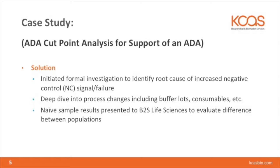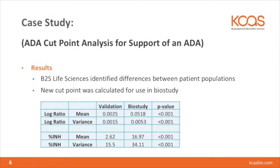As you can see here, we have data showing the validation log ratio mean and variance, and then the biostudy, as well as the percent inhibition mean and variance. As you can see, there is a wide degree of difference between the two, and this is what led us to reestablishing the cut point for the biostudy.